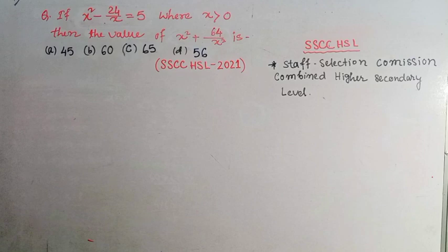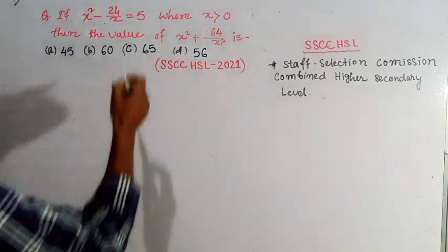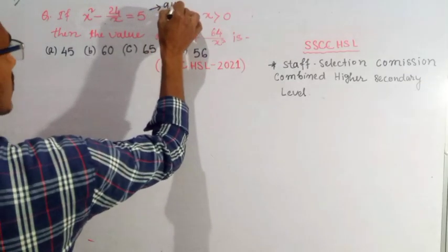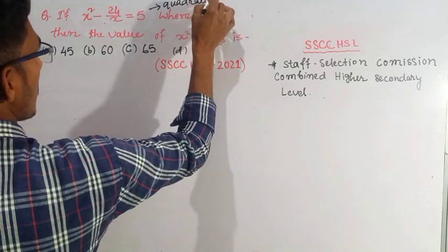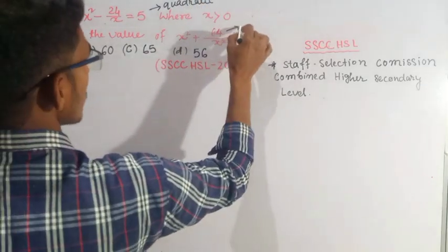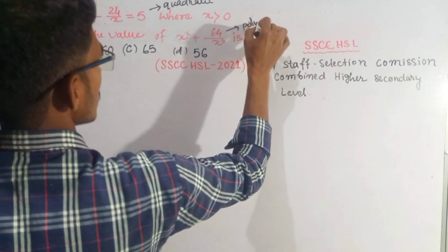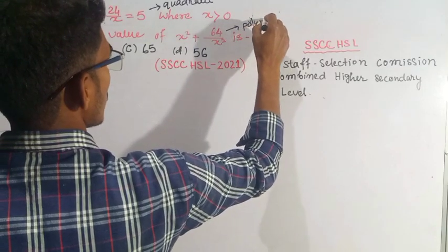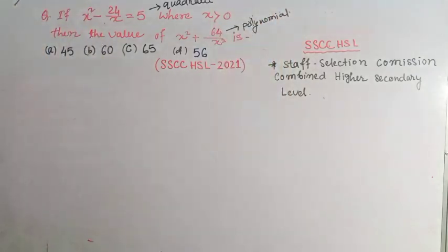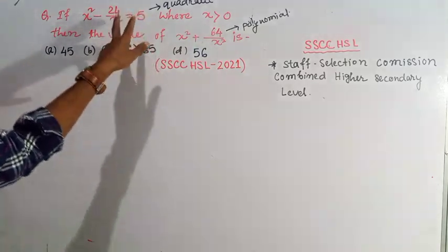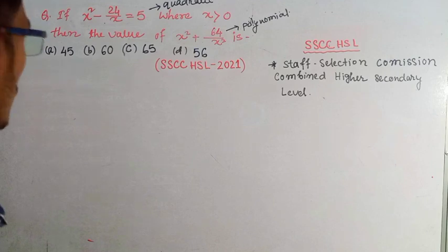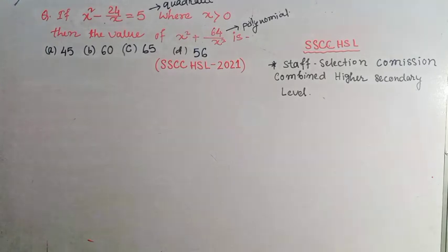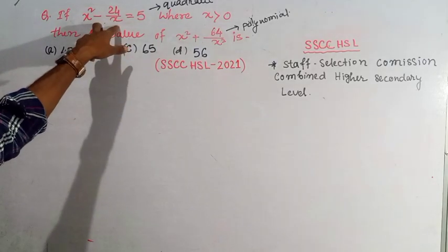I mean, this is the other type of equation. One is the quadratic equation. This is quadratic and this is polynomial. So you can see which quadratic equation.